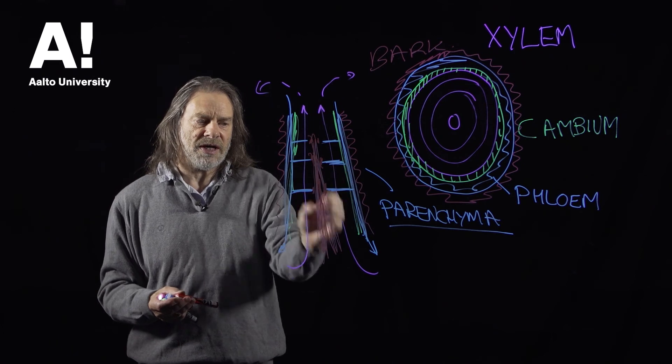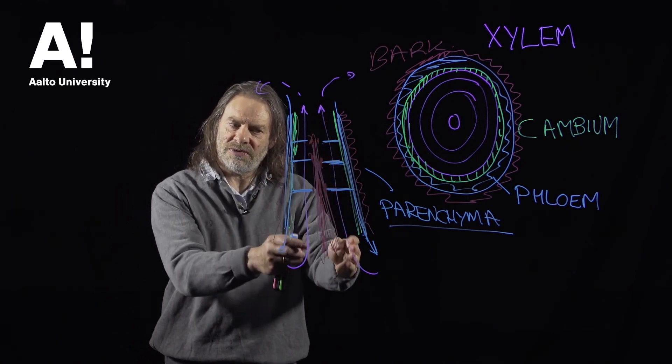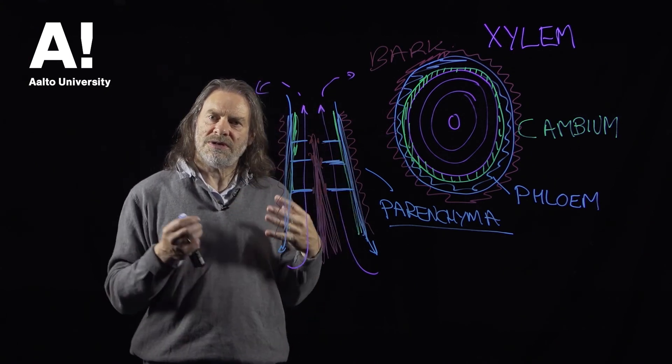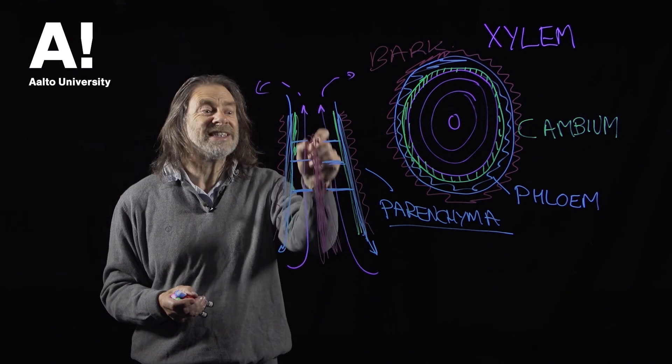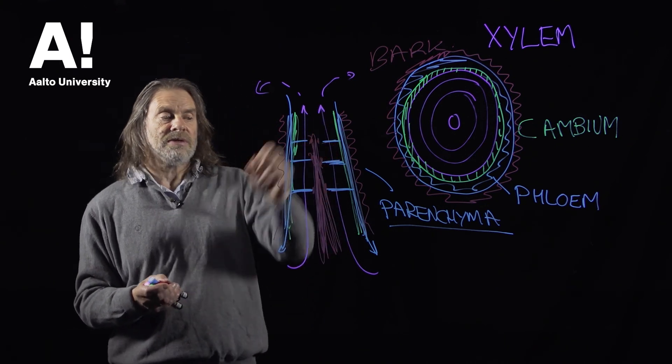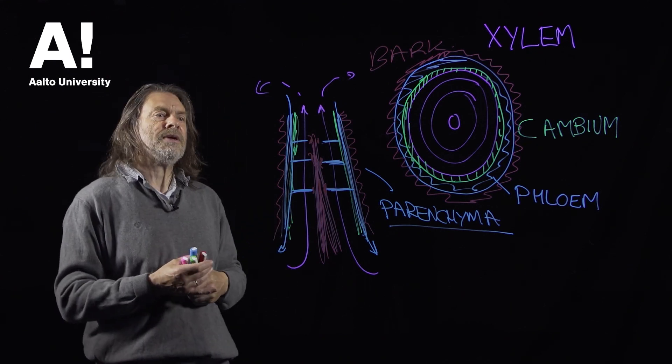The ray cells are alive, the vertical cells are dead. So although, technically speaking, wood is a dead tissue, the parenchyma cells are still alive, but the heartwood is completely dead tissue. It has no conductive role and there's no living cells in there.